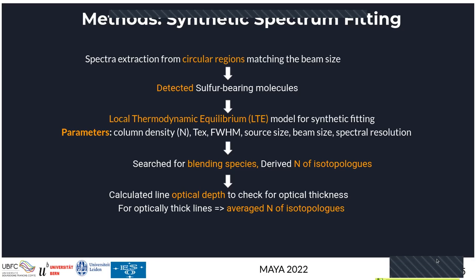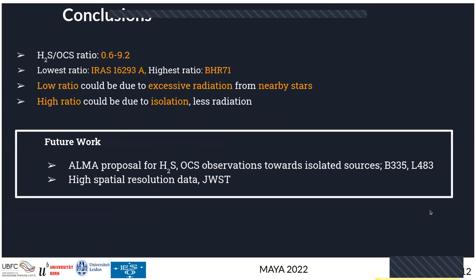A final question on the conclusion slide: you say a low ratio could be due to excessive radiation from nearby stars and a high ratio due to isolation and less radiation — what observations would be necessary to test these hypotheses? Because we have only one isolated source, we cannot make a strong conclusion. We need more isolated sources. We also had lower resolution for BHR 71, so higher-resolution data for those sources would help. Observations specifically toward the two isolated sources from the other paper would let us determine whether the effect is really driven by radiation or other external factors.